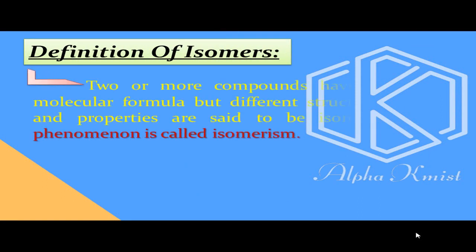Two or more compounds having the same molecular formula but different structural formula and properties are said to be isomers. دو یا دو سے زیادہ compounds جن کا molecular formula ایک جیسا ہو لیکن ان کے structural formula اور properties مختلف ہوں تو ہم ان کو isomers کہتے ہیں اور اس phenomenon کو isomerism کہتے ہیں۔